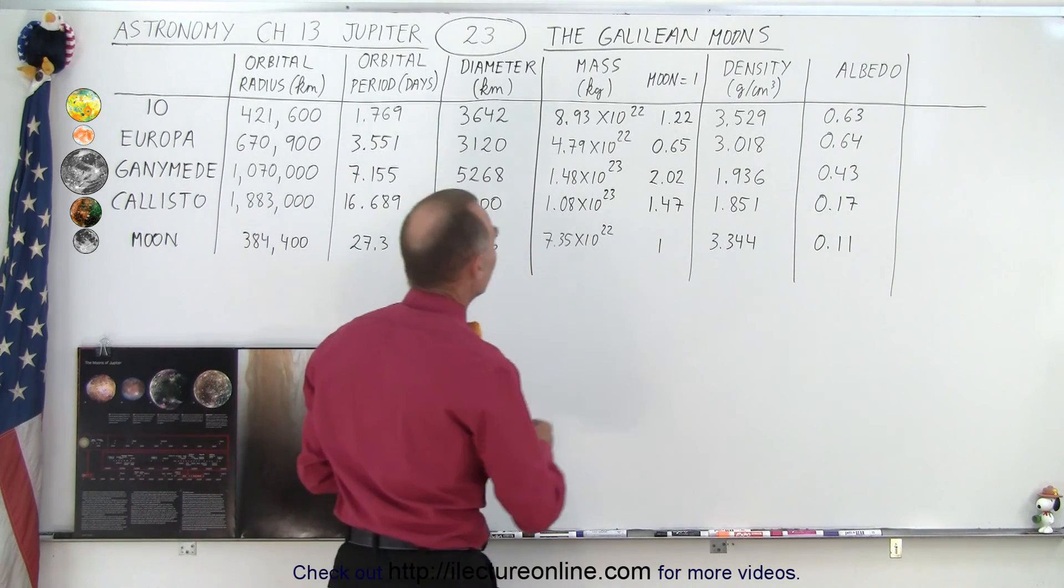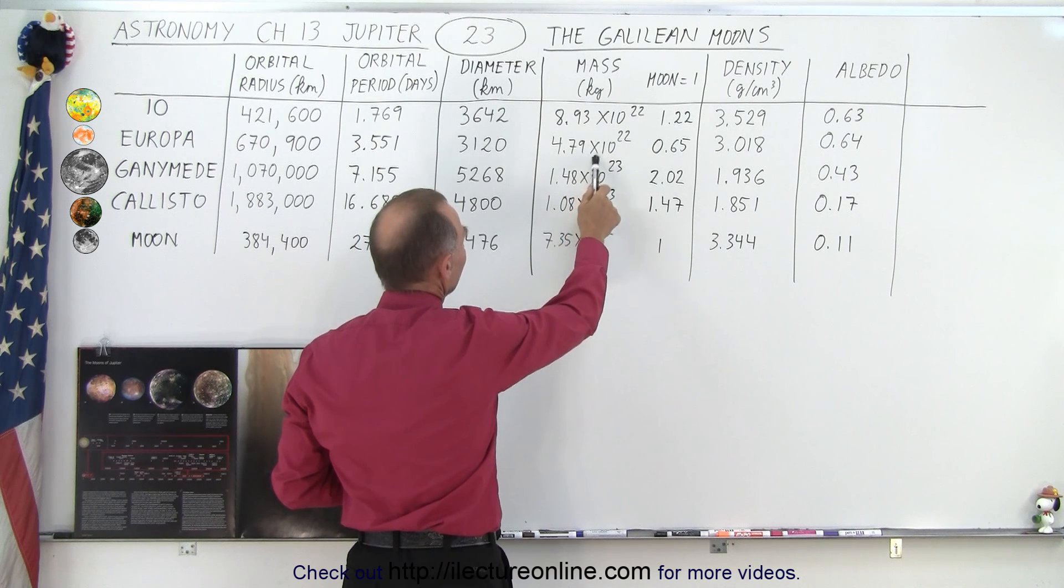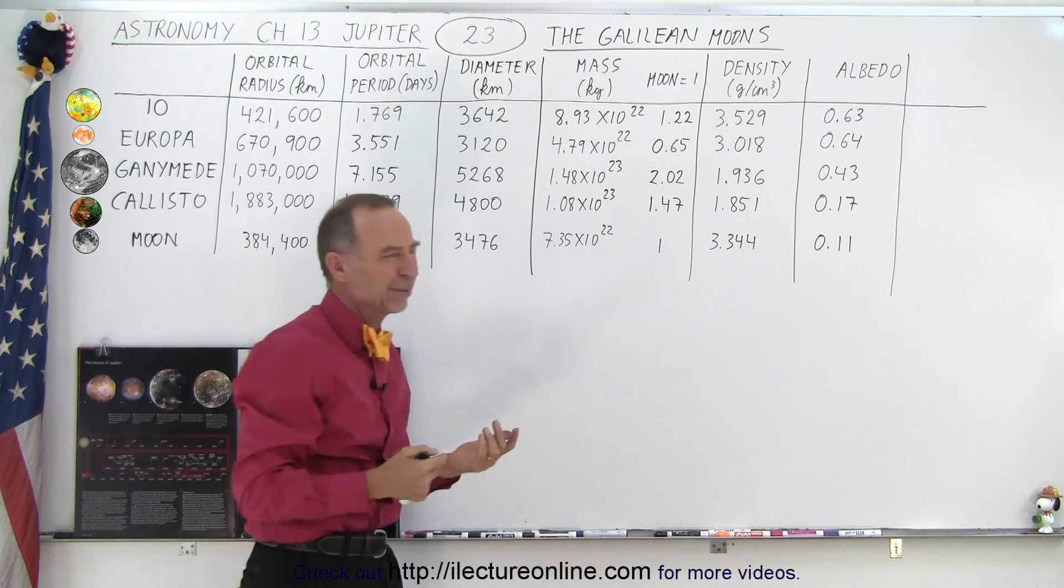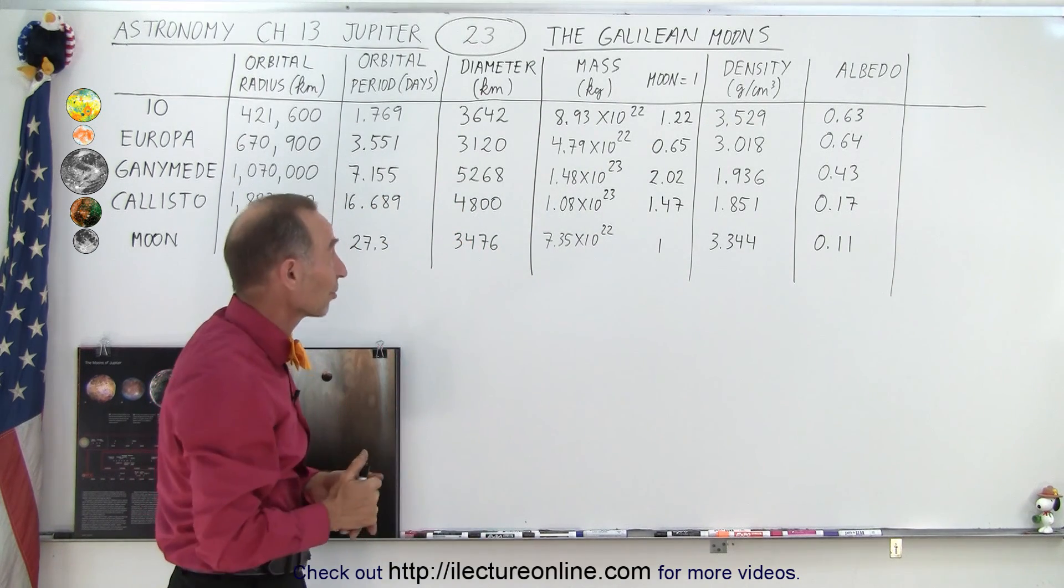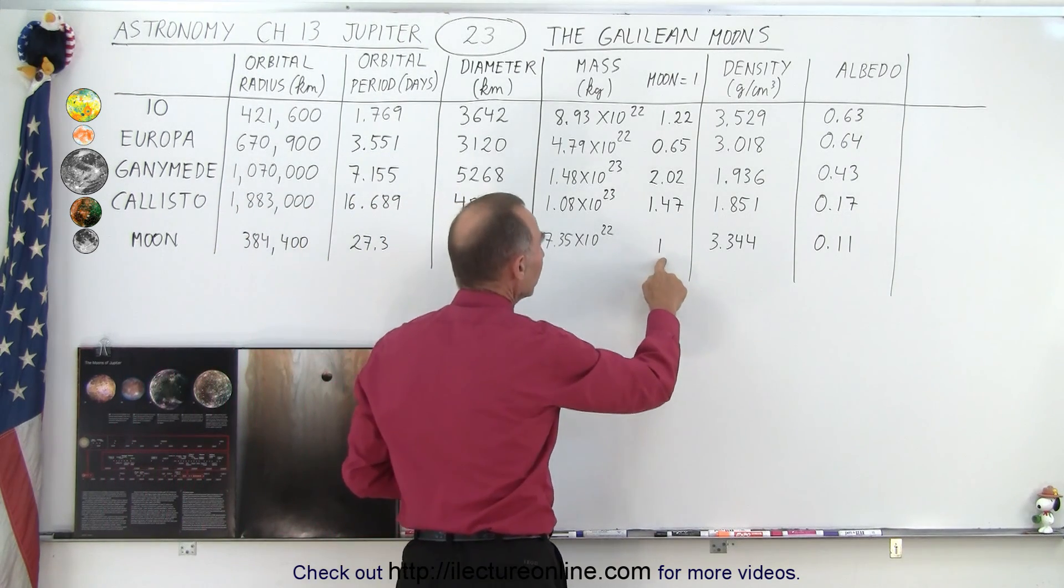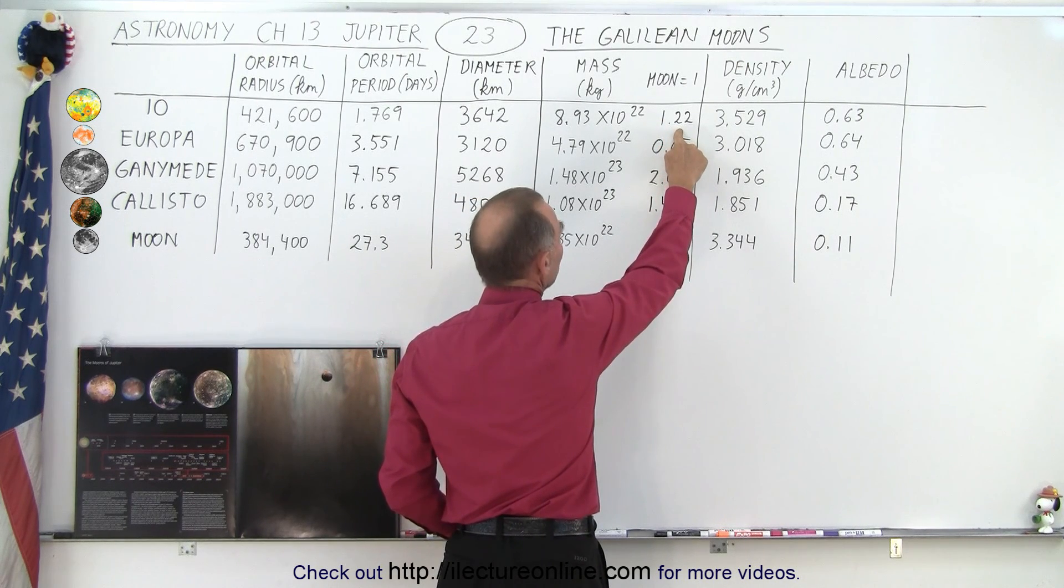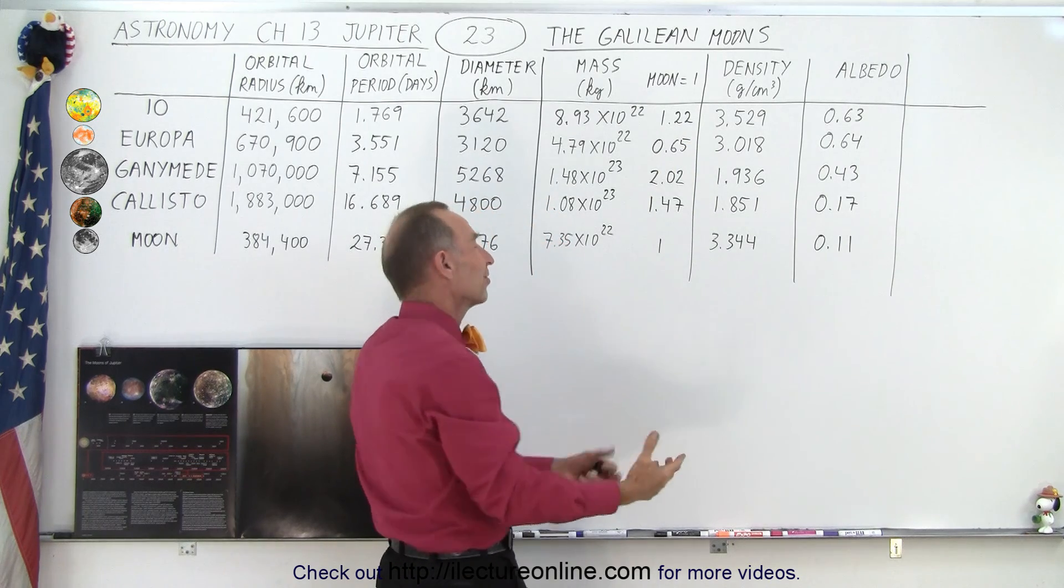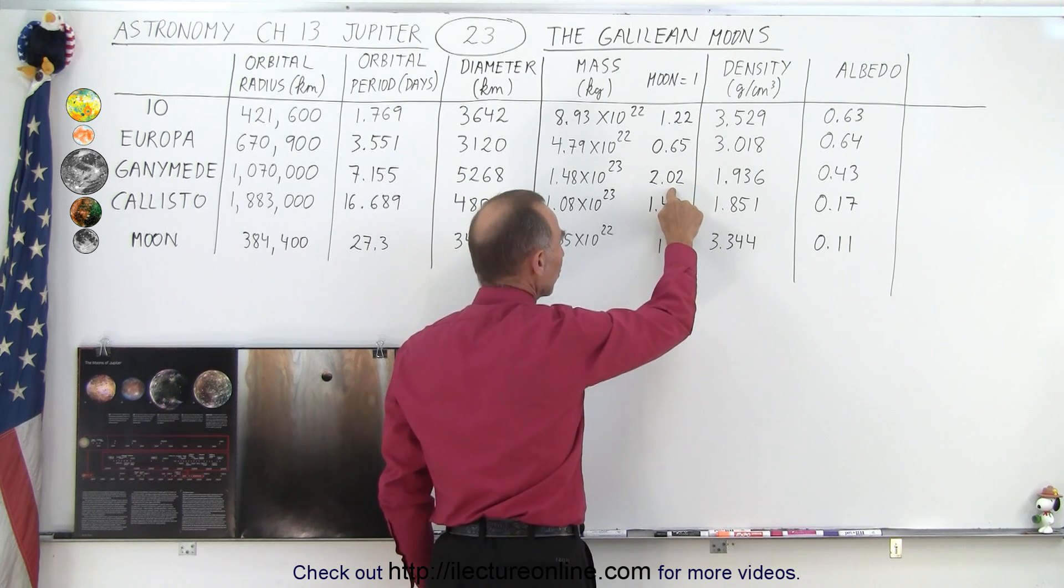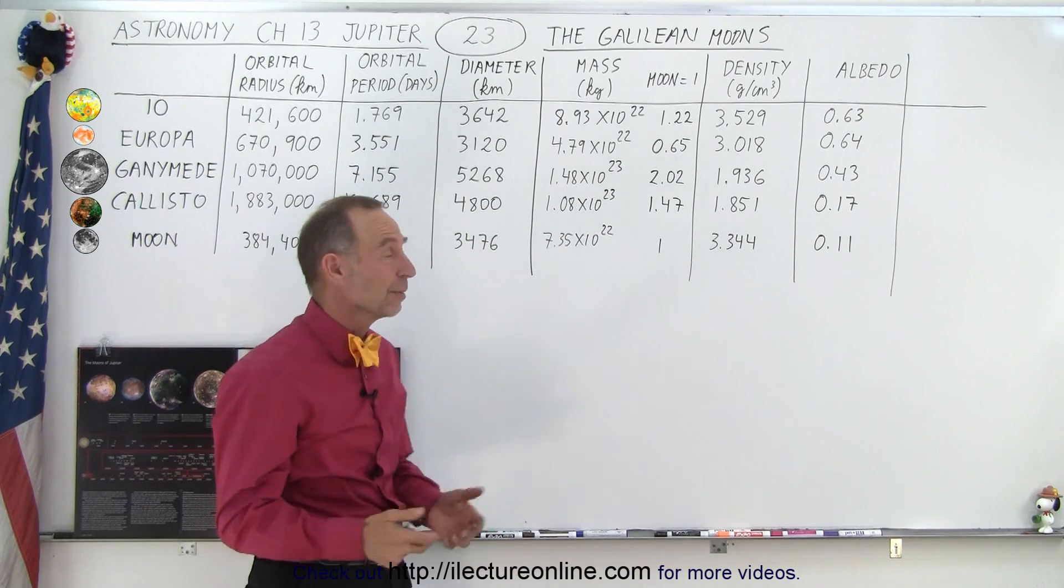As far as the mass is concerned, notice that it's anywhere from 8.93 times 10 to the 22nd, or 4.79 times 10 to the 22nd, all the way up to 1.48 times 10 to the 23rd in kilograms. But that may not mean a lot unless you look at these numbers a lot. So it's better to compare it to the size of the moon. If you call the size of the moon equal to 1, then mass-wise, Io is about 22% more massive than the moon. Europa is considerably less massive than the moon. Ganymede has twice the mass, and Callisto has about 50% more mass than the moon.